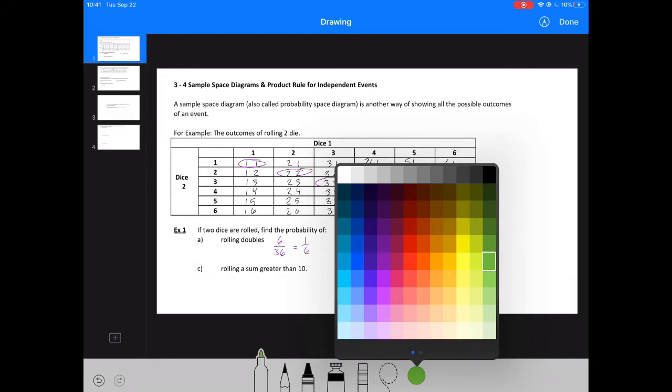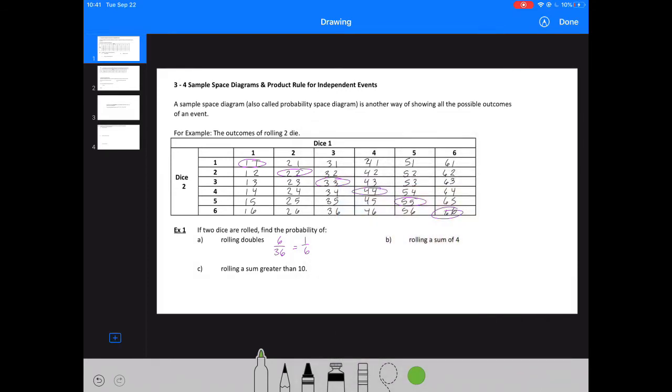Now, what about rolling a sum of 4? So I'm going to circle those in green. Let's see. 1 and 3 add to 4. 2 and 2 add to 4. 3 and 1 add to 4. And so I've got 3 out of 36 or 1 twelfth. That's my probability of rolling a sum of 4.